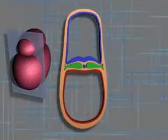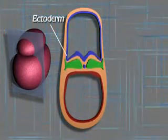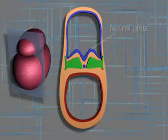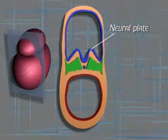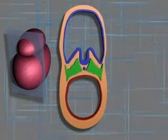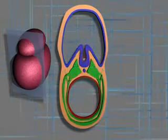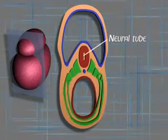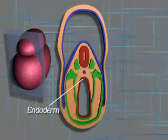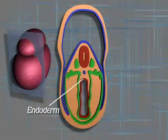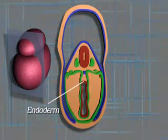On the dorsal surface of the embryonic disc, the ectoderm forms the neural plate, whose lateral boundaries elevate to form a neural tube. This will eventually become the brain and the spinal cord. The endoderm forms a tube which will become the gastrointestinal tract.